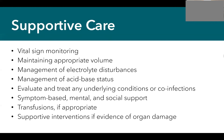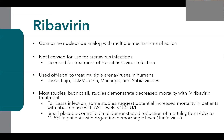For antiviral options, we have two. Ribavirin is a guanosine nucleoside analog with antiviral effects and potential immune modulation. None of these treatments are licensed for Arena Virus infections, so ribavirin use is off-label. It has been used to treat Lassa, Lujo, LCMV, Junin, Machupo, and Sabia viruses. Most studies in animals and humans have shown decreased mortality with IV ribavirin treatment.